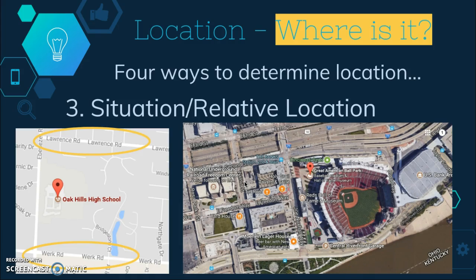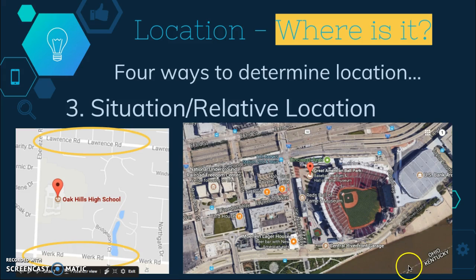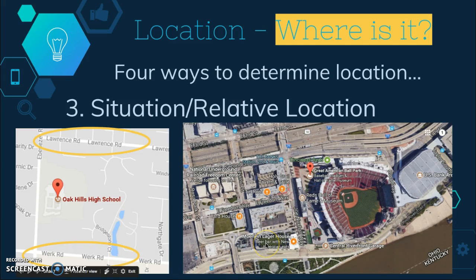The next way to talk about location is situation, or relative location. This is the location of a place in relation to other places — it can help us identify a location by comparing it to familiar places. For example, if you were trying to give someone directions to Great American Ballpark, and they had been to US Bank Arena and the Ohio River, you could tell them that Great American Ballpark is right next to US Bank Arena on the banks of the Ohio River. Or if trying to meet someone at Moorline Logger House after the Reds game, you could say it's on Joe Nuxall Way and is the closest restaurant to the river.